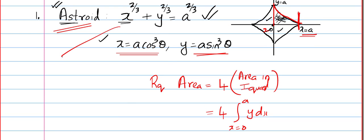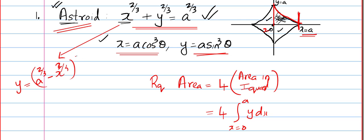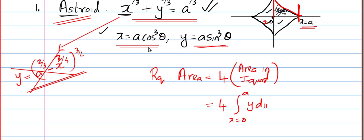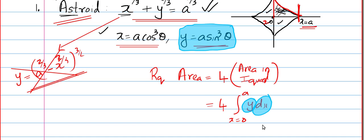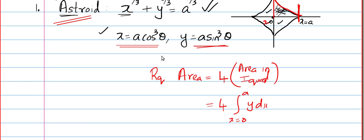If you try to find y from the Cartesian equation it will be a mess — you'd get (a^(2/3) − x^(2/3))^(3/2), which is difficult to integrate. So I go for the simpler version: the parametric form. The advantage is we already have the y value — it's a sin³θ — and we can find dx just by differentiating x = a cos³θ.